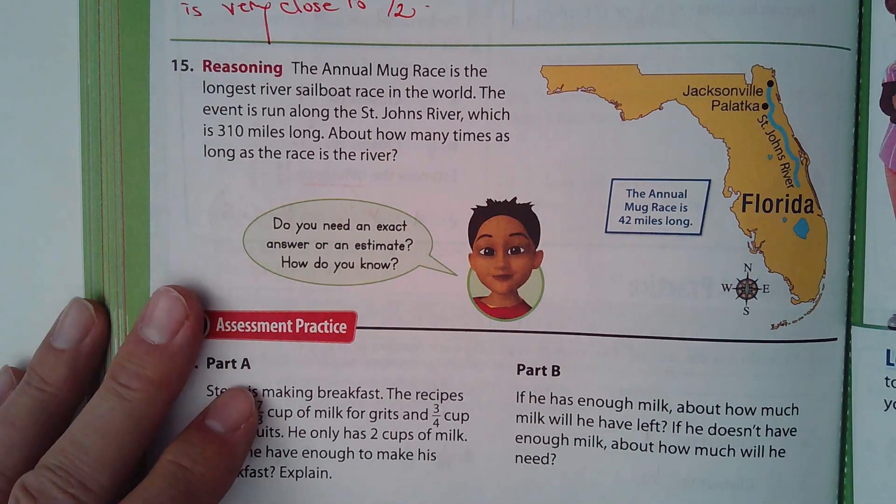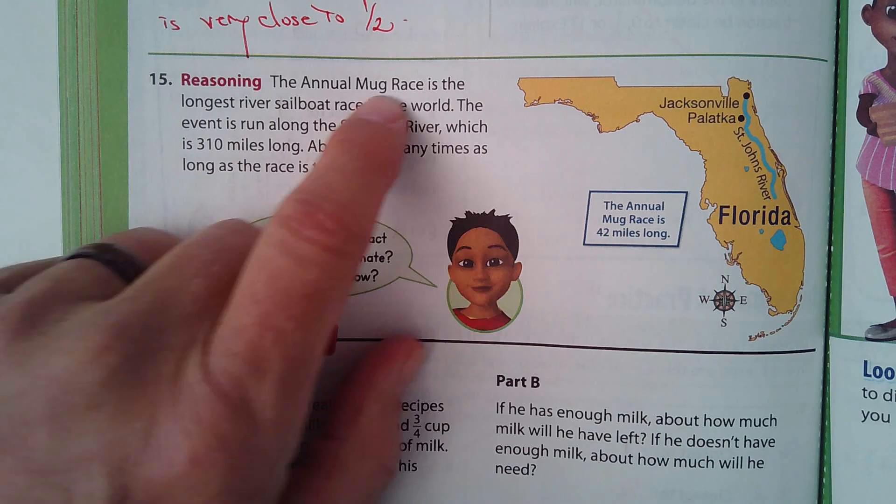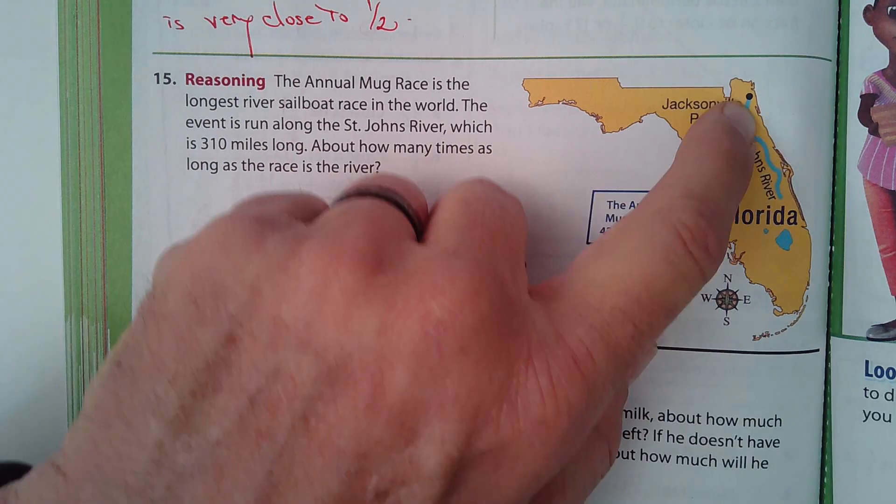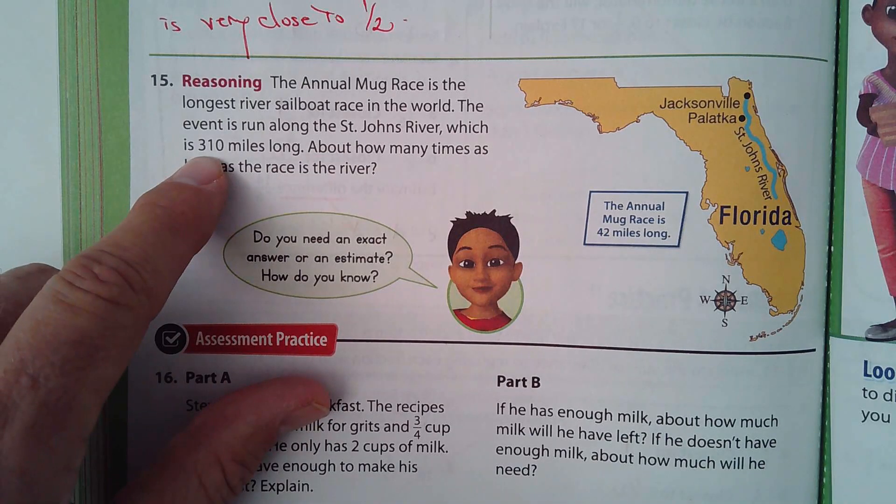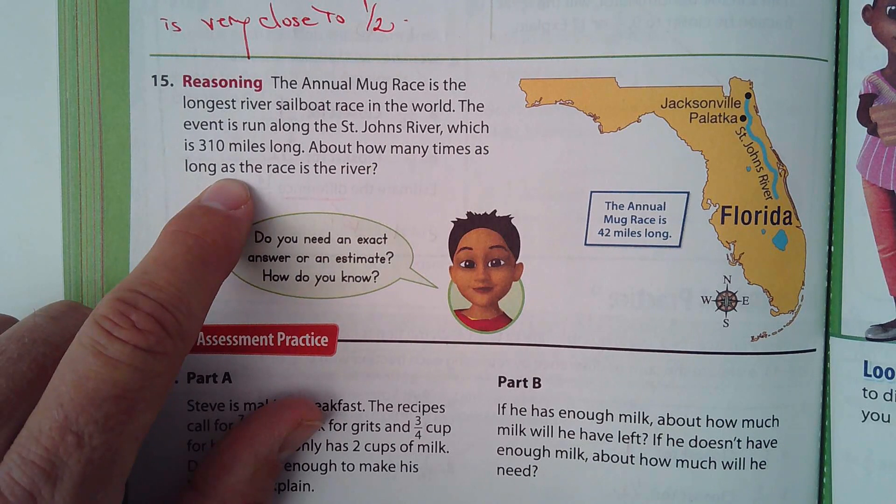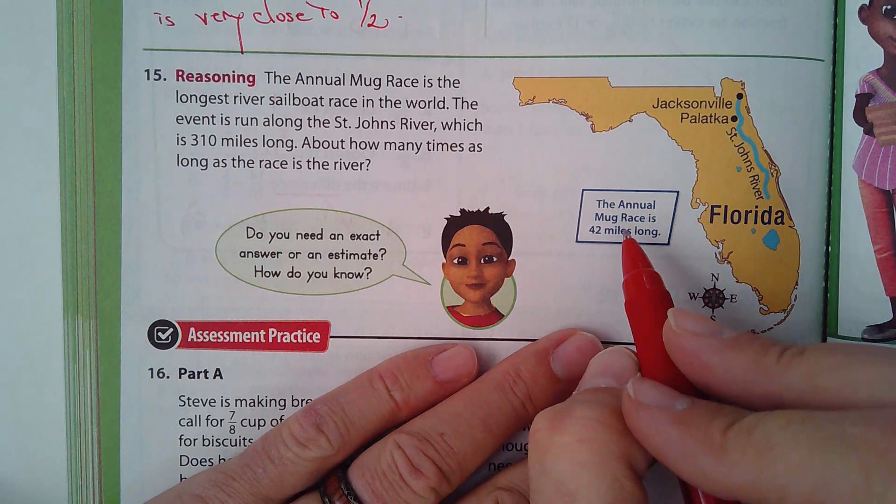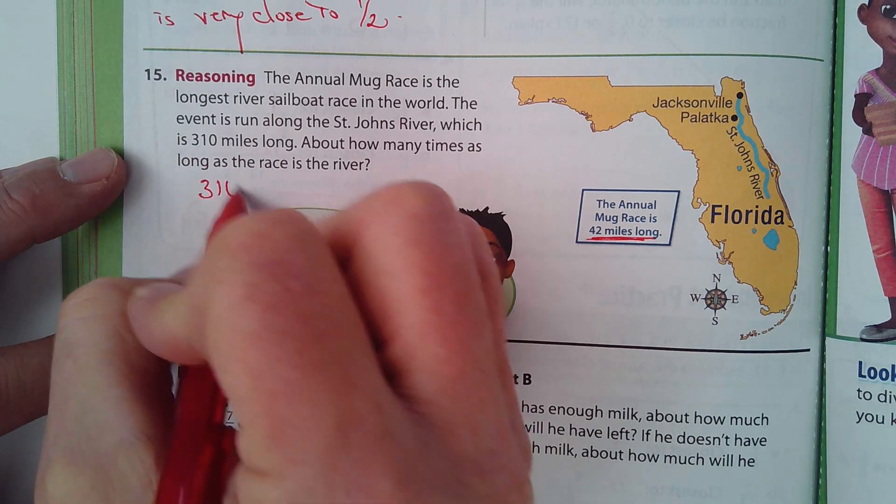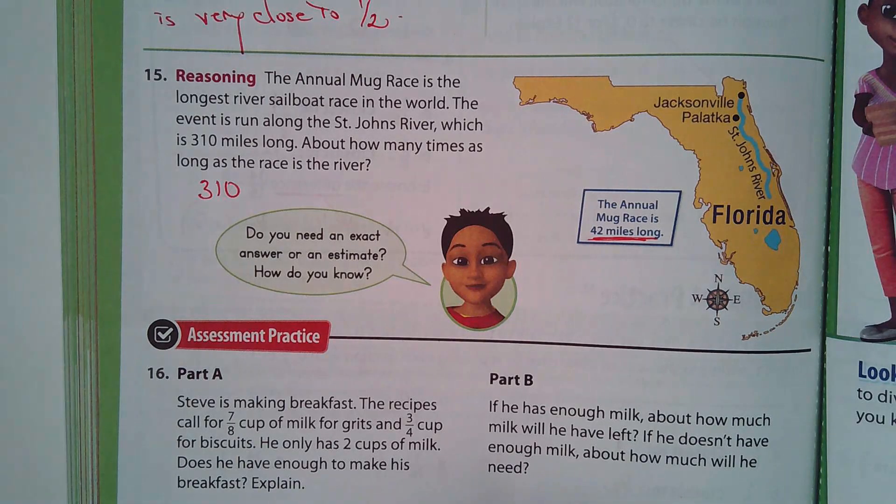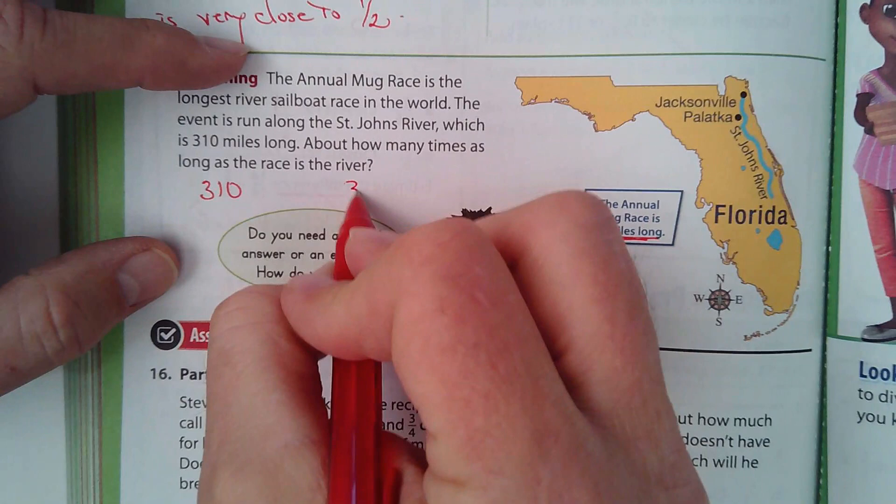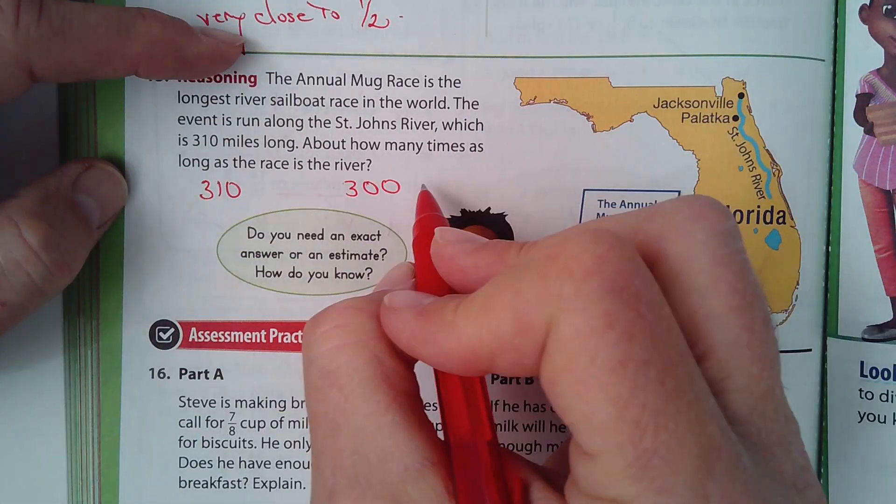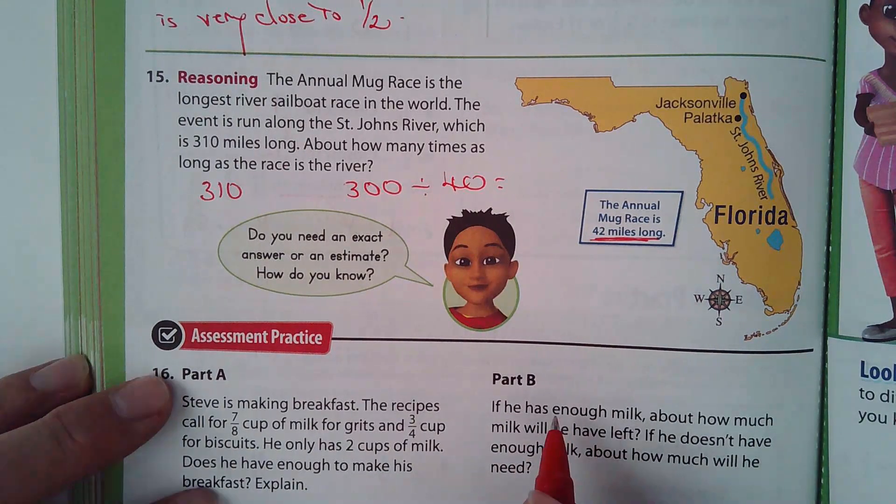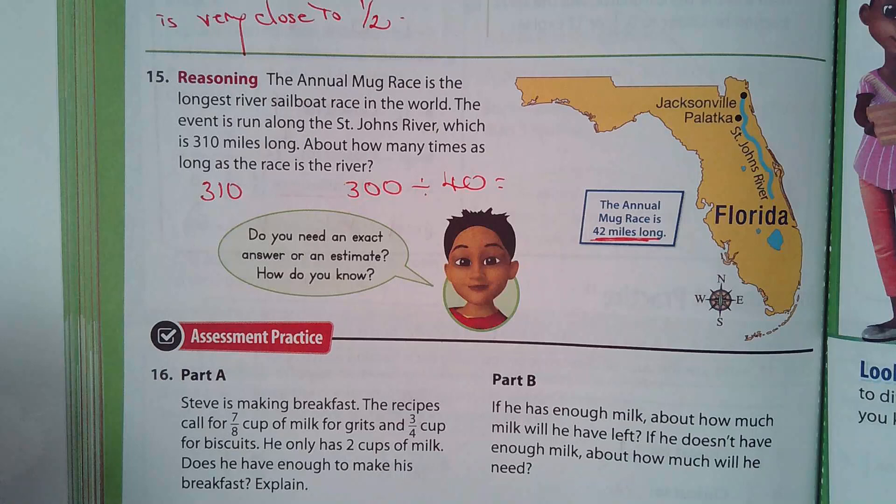Fifteen. The annual mug race, which I'd never heard of before, is the longest river sailboat race in the world. The event runs along the St. John's River. It says the river is 310 miles long. About how many times as long as the race is the river? Well, the race right here, they tell us, it's 42 miles long. So 310, what's an easy number to make 310 into that we could work with? 300. So I'd make it 300. And then 42, we could make that 40. And so you're just dividing that. And that'll tell you about how many times that length of race would fit into that river.